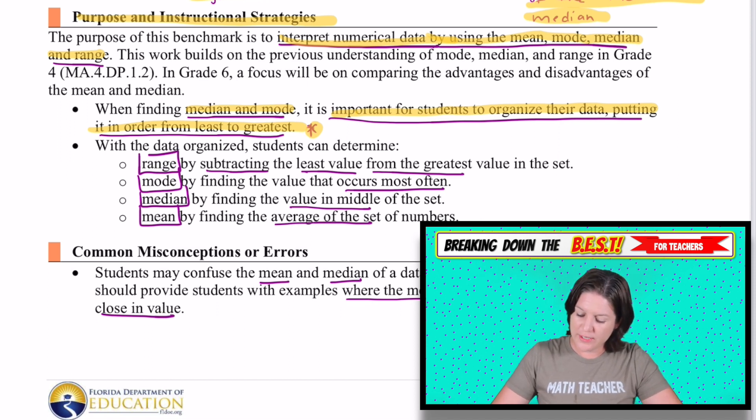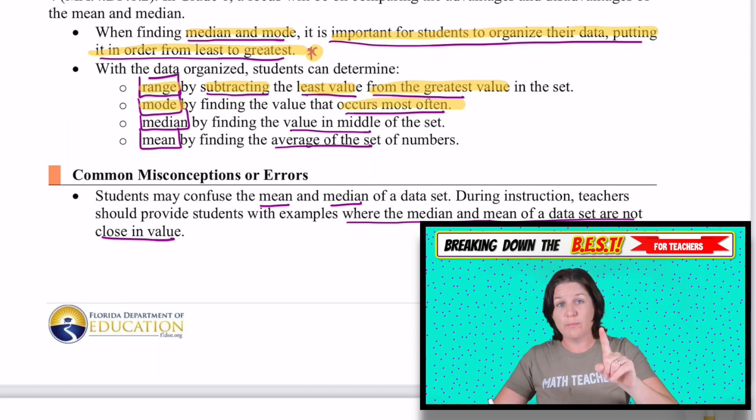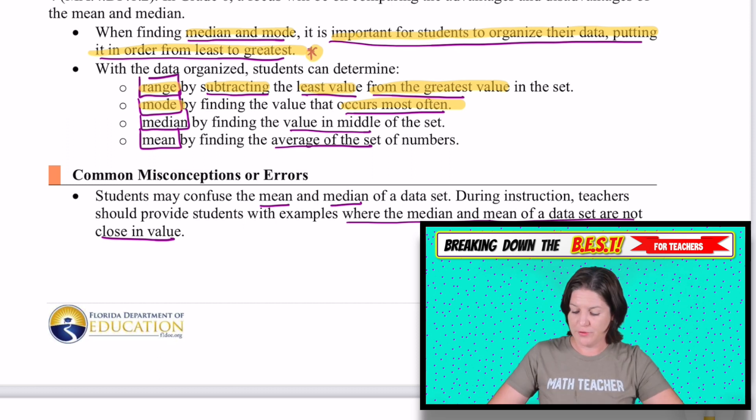With the data organized, students can determine the range by subtracting the least value from the greatest value. The mode by finding the value that occurs the most. Just keep in mind that there could be one mode, no modes, because nothing appears the most often, or even two or more modes. If you have two different data points appearing the same number of times, then you would have two modes or more than that. For the median, that's the middle number. So we're finding the value in the middle of the set. And for the mean, that's finding the average of the set.